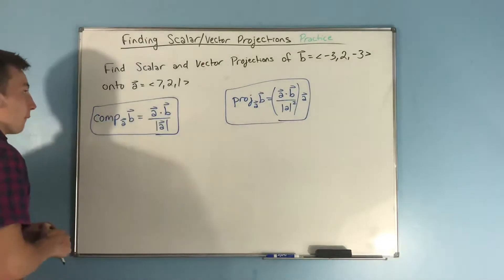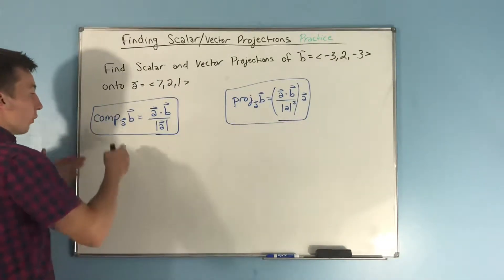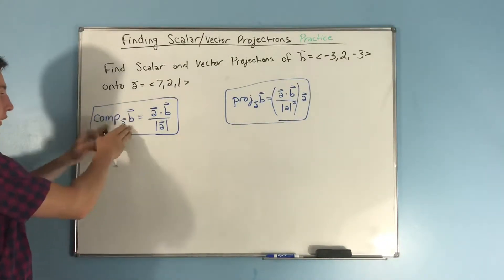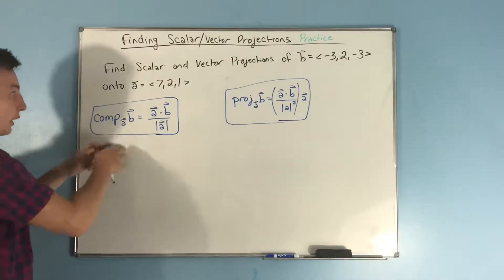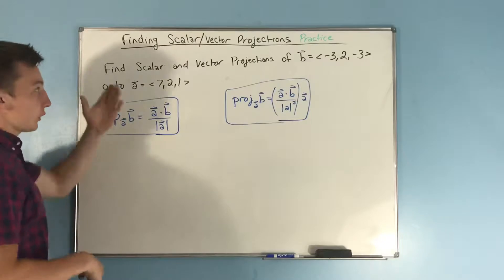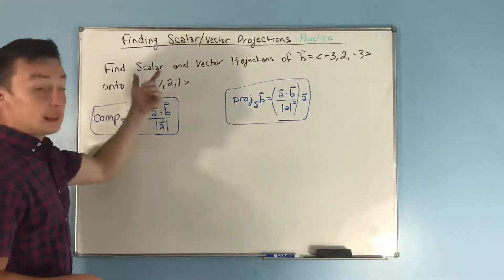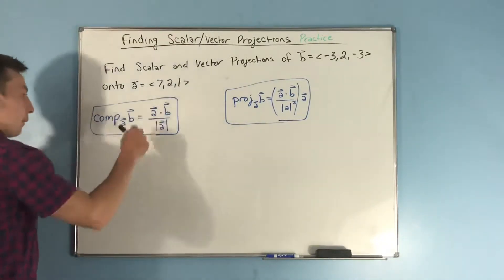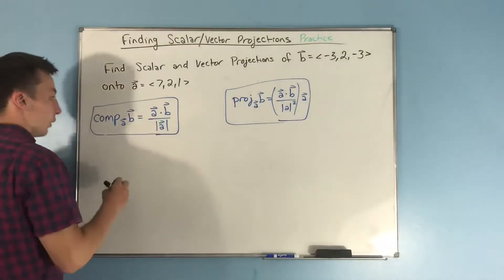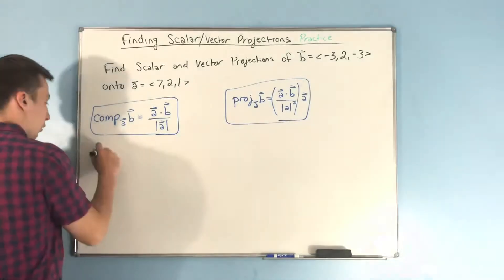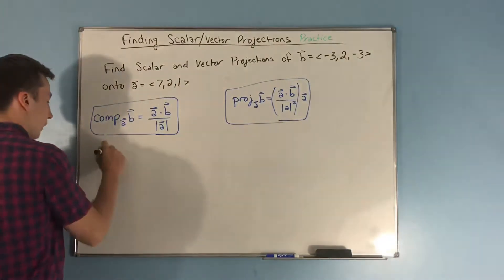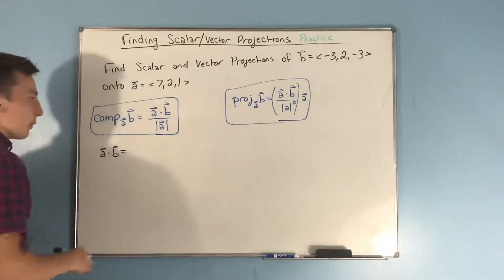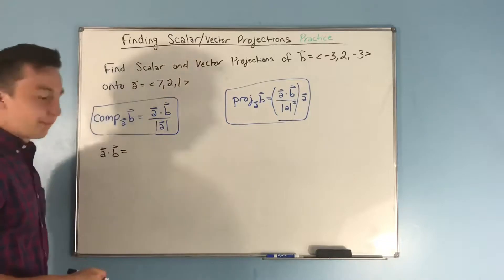First thing we need to do: let's start off with the component of B onto A — also known as the scalar projection. This is A dot B over the magnitude of A. So two parts: first we need to find A dot B, and then we're going to find the magnitude of A.